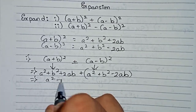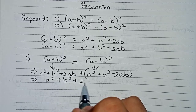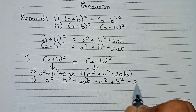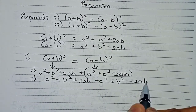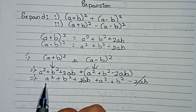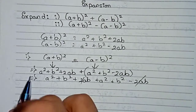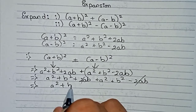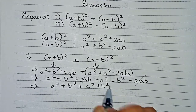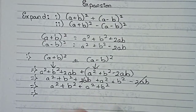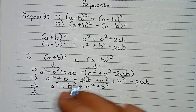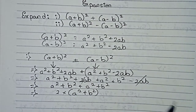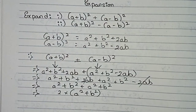Now if we simplify it, one term multiplied by two gives a different term. So 2 × (a² + b²) — combining like terms gives us these two variables. This is your final answer for question one.